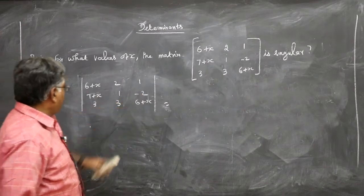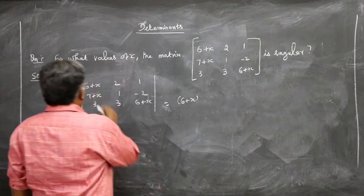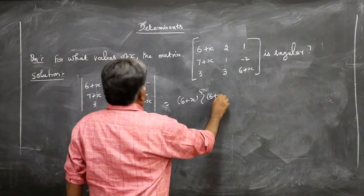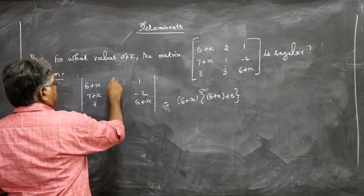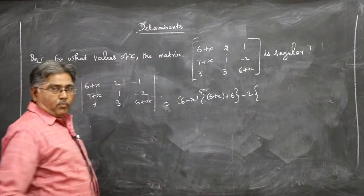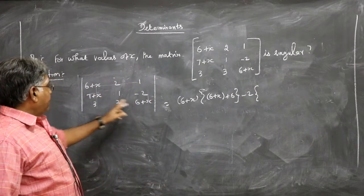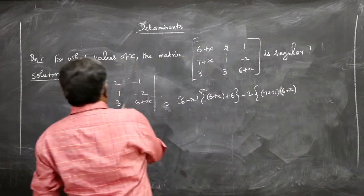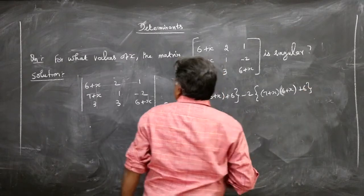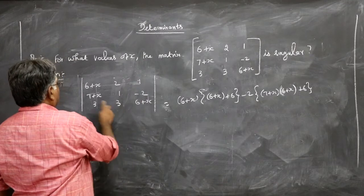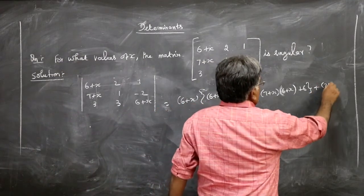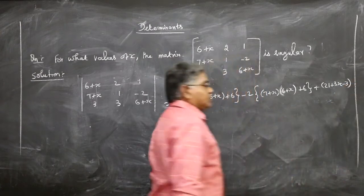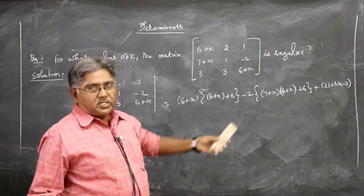To evaluate the determinant, expanding by the first row: 6+x into (forget about this column and this row), you get (6+x)(6+x+6) minus 2 into (forget about this column and row) giving (7+x)(6+x+6), then plus 1 into (21+3x).